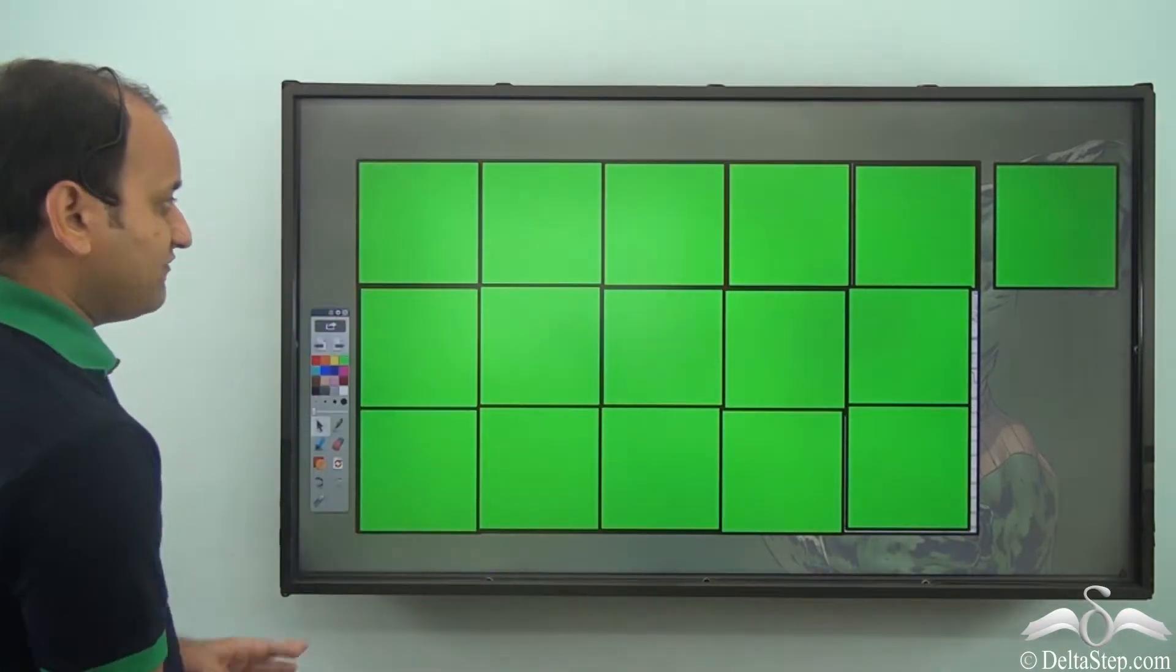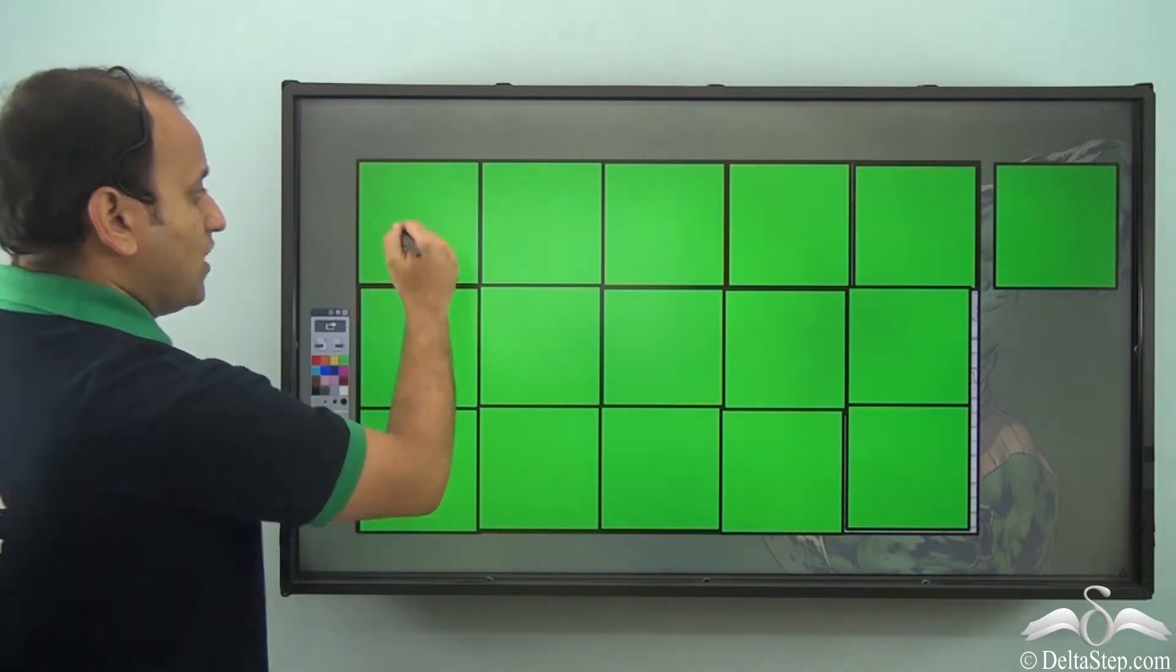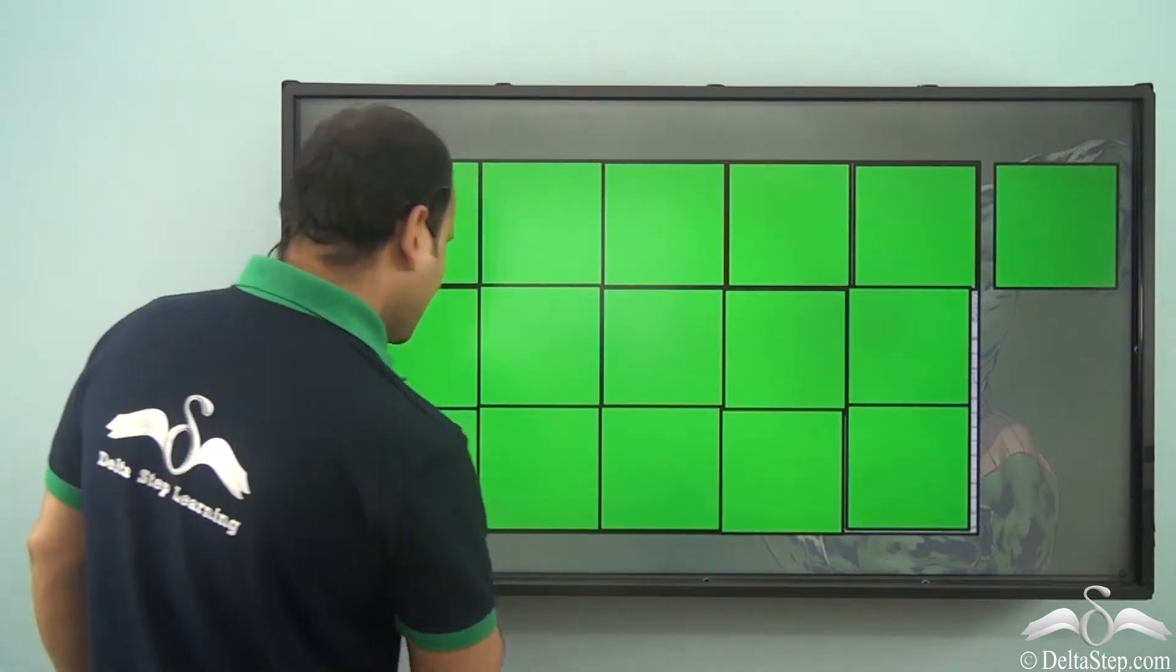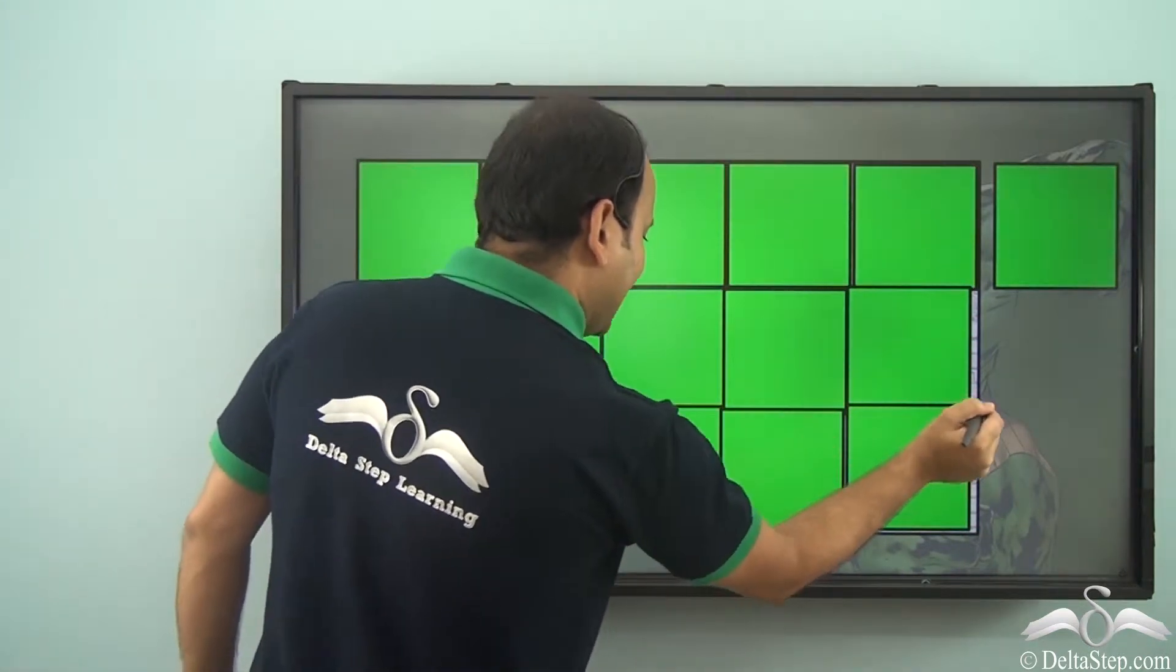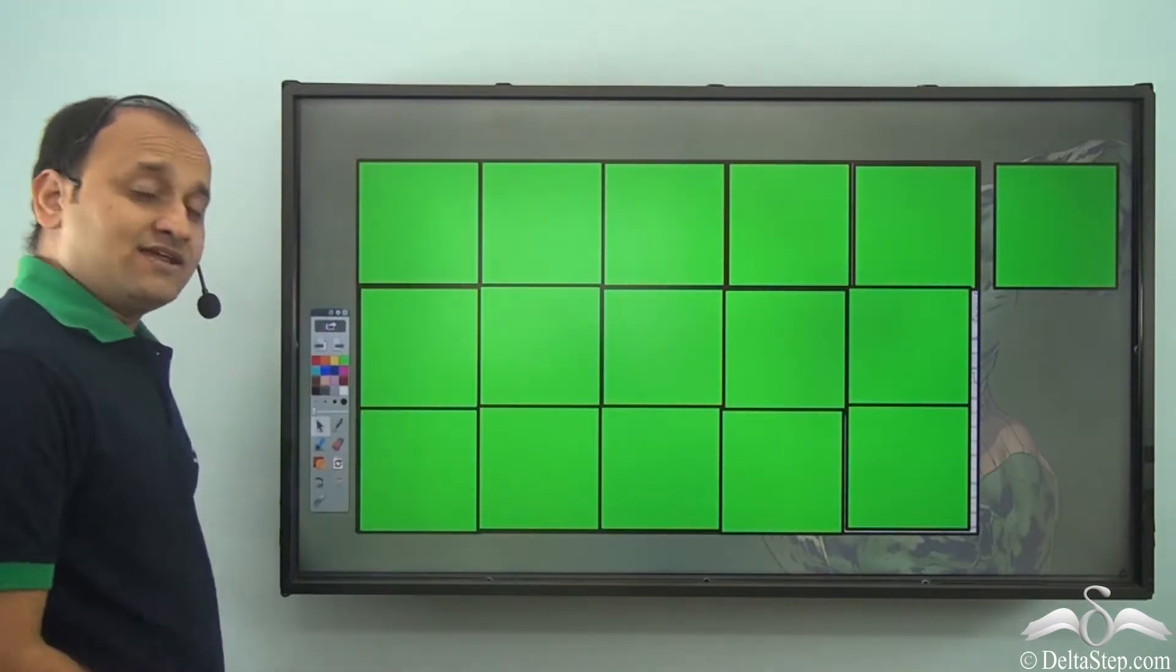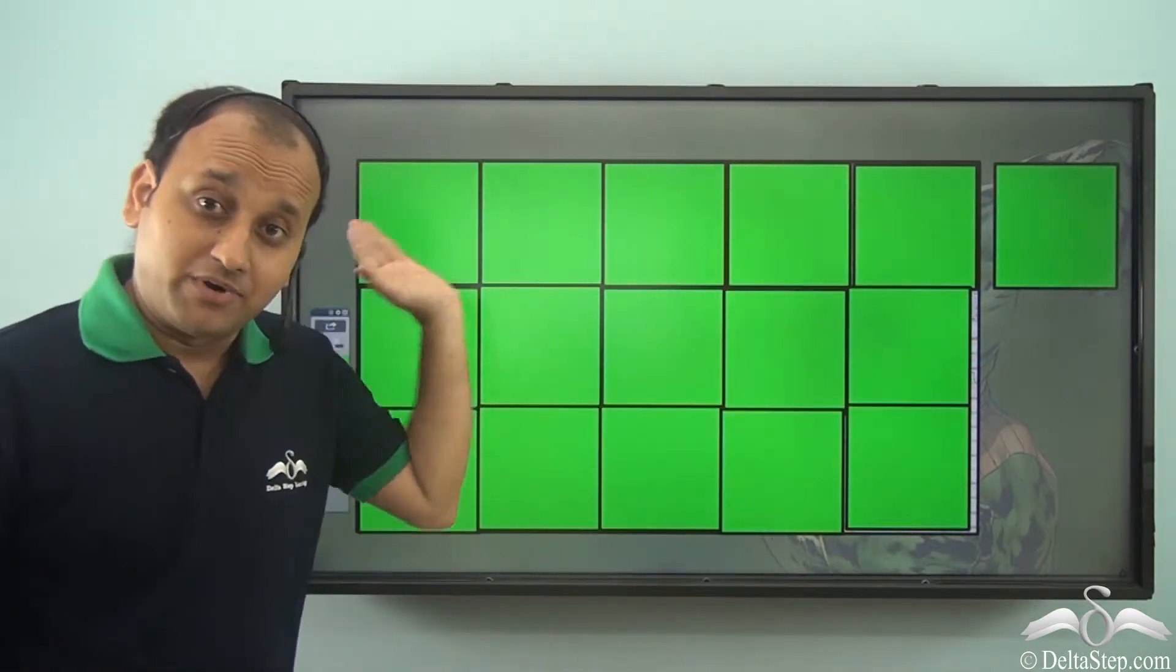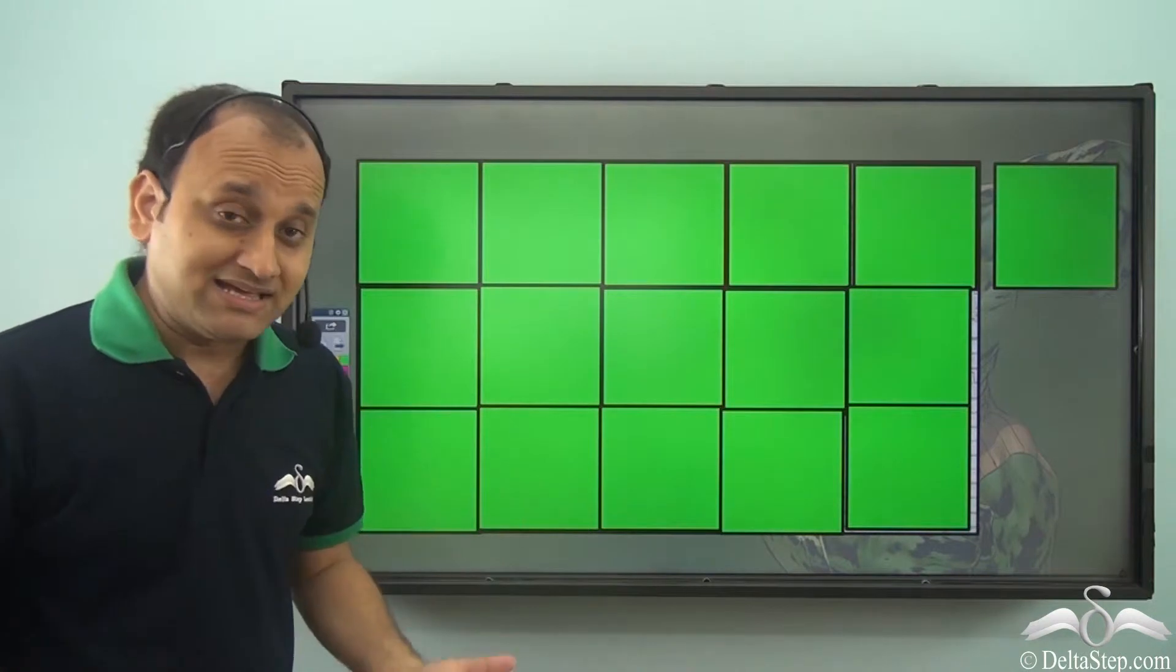So approximately we can say that one, two, three, four, five, six, seven, eight, nine, ten, eleven, twelve, thirteen, fourteen, and fifteen square tiles completely cover this particular space, which means the area of this particular space is fifteen square tiles.